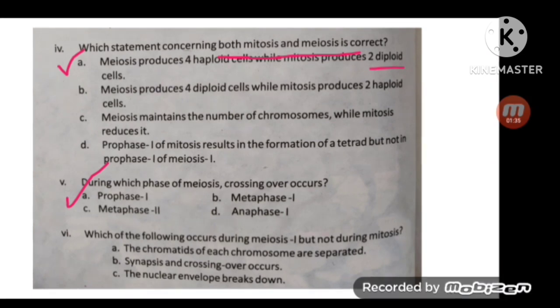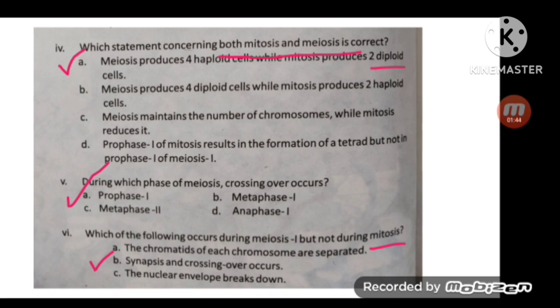The next MCQ: which of the following occurs during meiosis one but does not occur during mitosis? The correct option is B — synapsis and crossing over occur only in meiosis.